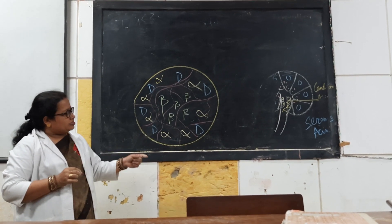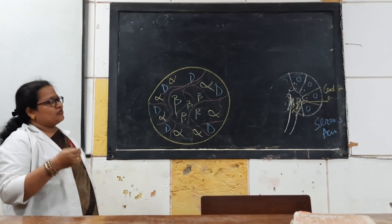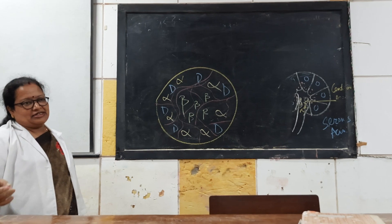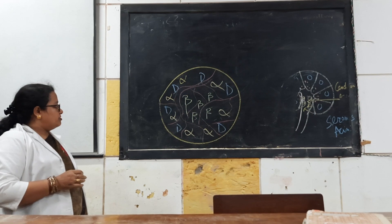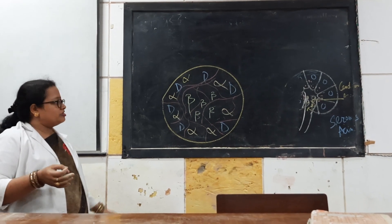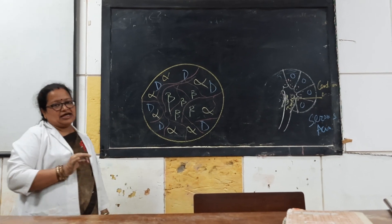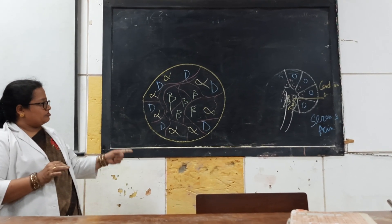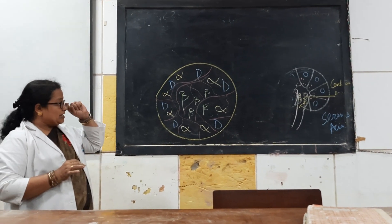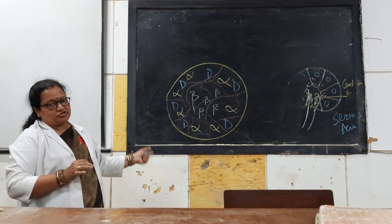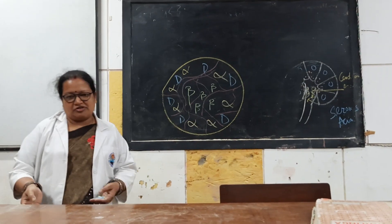The main function of the pancreas is to digest carbohydrates, proteins, and fats. The centroacinar cells release a large number of bicarbonate ions. Pancreatic amylase and water are also released in large amounts. This is all about the histology of pancreas.